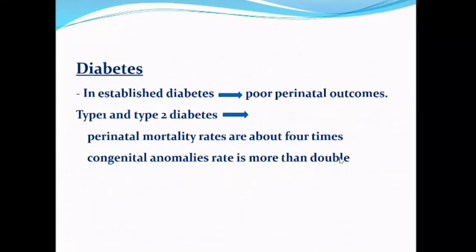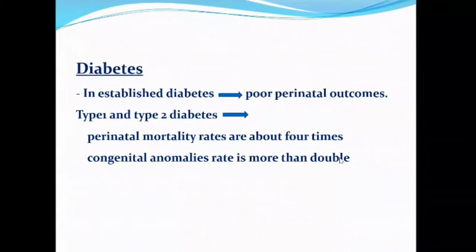Diabetes in pregnancy is a very important complication. Mothers with established type 1 or type 2 diabetes have poor perinatal outcomes, even with good obstetric care. Perinatal mortality rates among women with type 1 or type 2 diabetes are about four times higher than in the general population, and the rate of congenital anomalies is also double that of the general population.